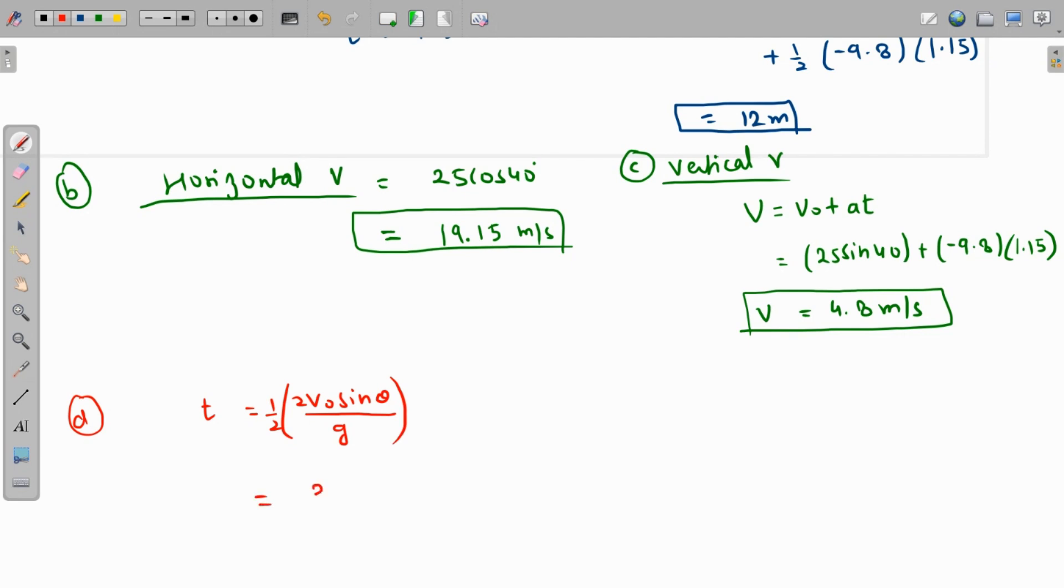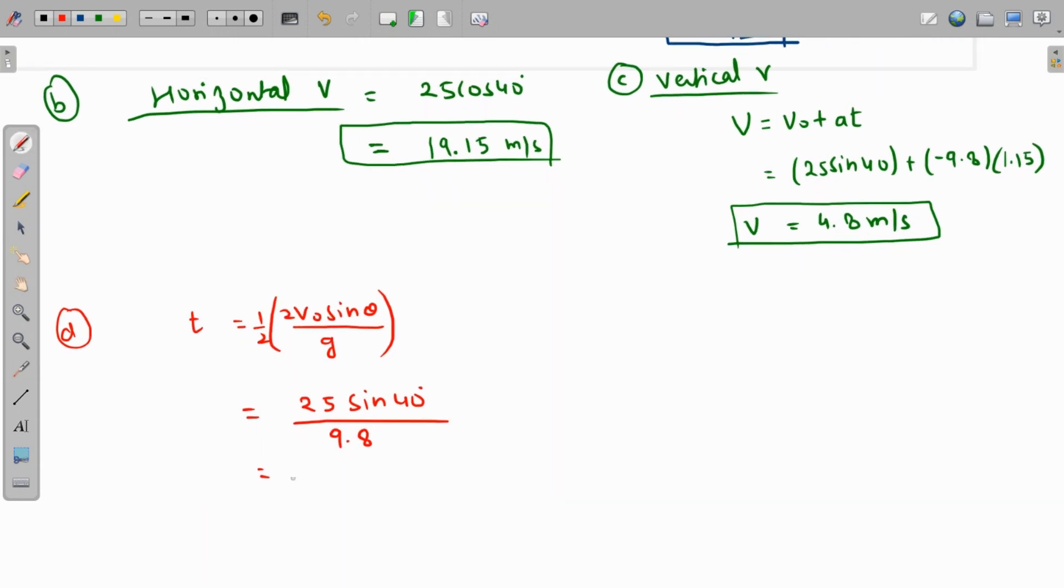Now v naught is 25, sine of theta is 40 over 9.8. So this will be the time at which it reaches the highest point. Let me just grab my calculator. This value comes out as 1.64. So clearly, 1.64, after 1.64 seconds it will reach the highest point, but it hits the wall at 1.15 only. So clearly it has not yet crossed the highest point